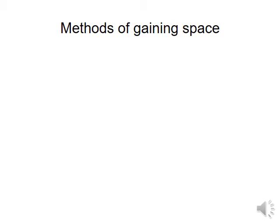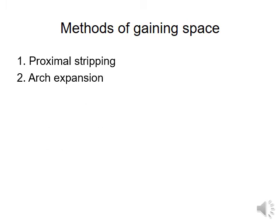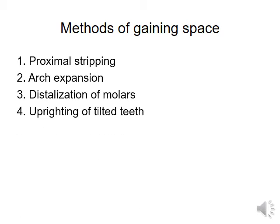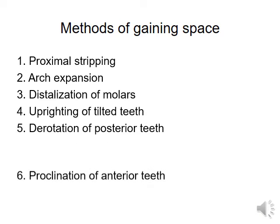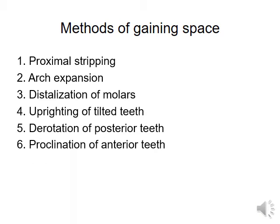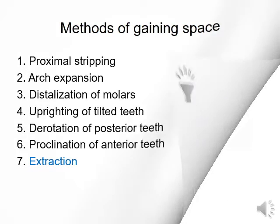Methods of gaining space in orthodontics are: proximal stripping, arch expansion, distalization of molars, uprighting of tilted teeth, derotation of posterior teeth, proclination of anterior teeth, and extraction.